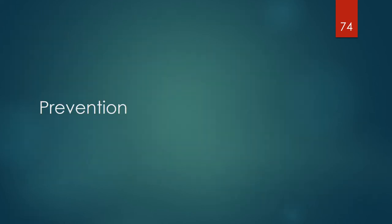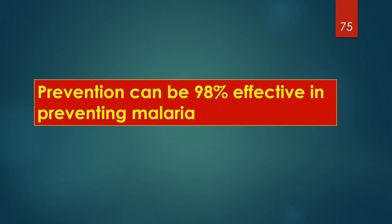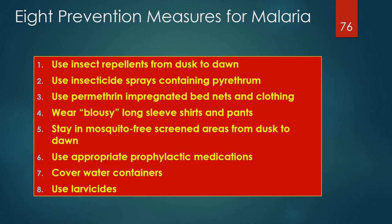Simple prevention techniques can be 98% effective in preventing malaria, and these strategies will also significantly impact many other mosquito-borne illnesses. Without precautions or anti-malarial prophylaxis, the infection rate for non-immune individuals is approximately 1.2% per month or 14.4% per year. There are 8 prevention measures for malaria that, if used appropriately, can reduce malaria transmission by 98%.